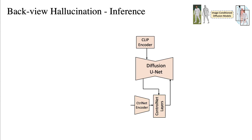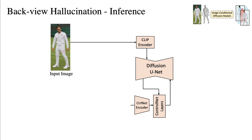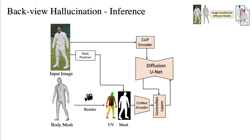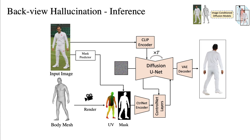In the inference stage, we use the input images as conditions. We further predict UV maps and silhouette masks using an off-the-shelf pose estimator and mask predictor. Back-view images are then generated through an iterative denoising process and decoded using a pre-trained VAE decoder.